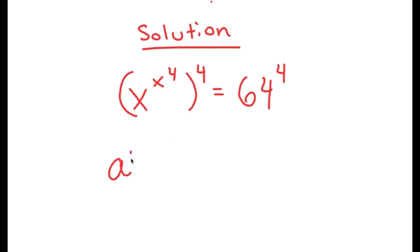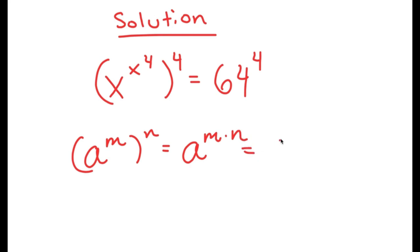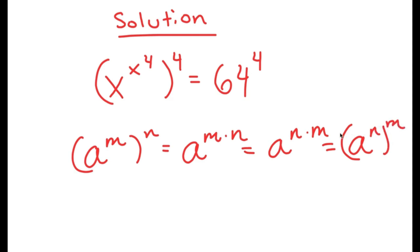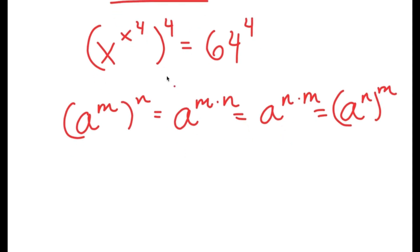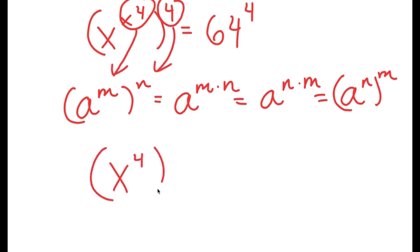If I have something in the form a to the power of m to the power of n, this is equal to a to the power of m times n. However, m and n are interchangeable, meaning this can also be written as a to the power of n times m, which equals a to the power of n to the power of m. So in x to the power of x to the power of 4, to the power of 4, I can think of x to the power of 4 as m and 4 as n. This turns into x to the power of 4 to the power of x to the power of 4, equals 64 to the power of 4.